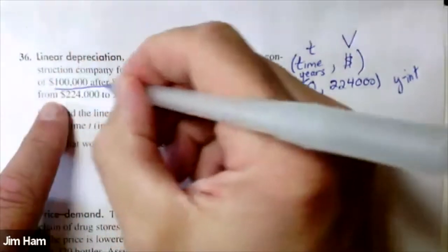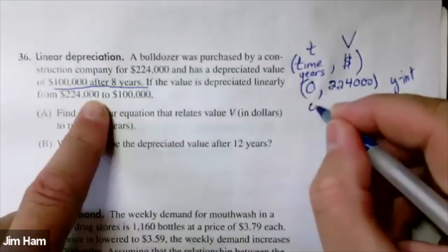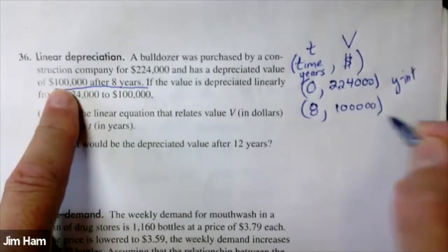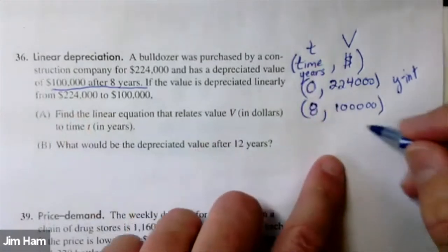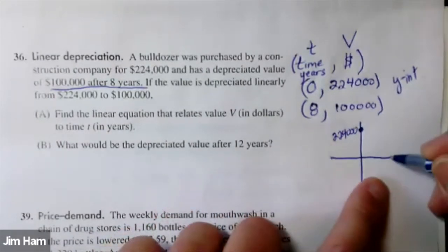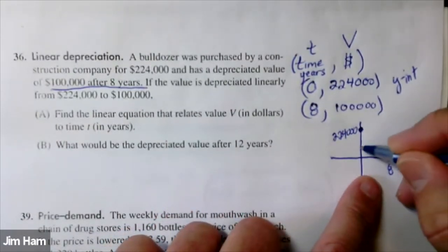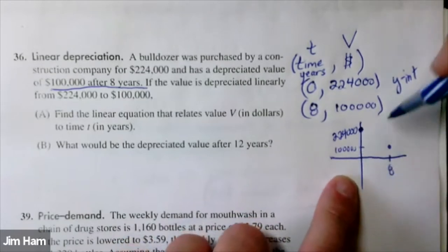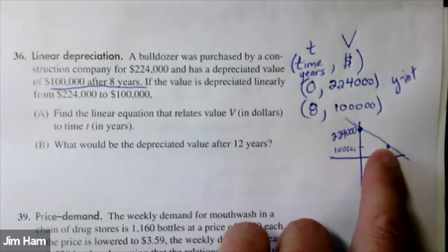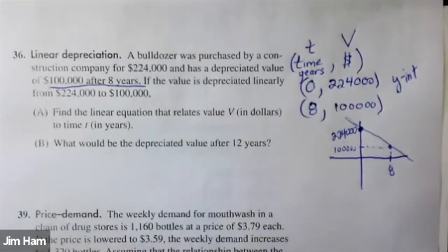The other point they give you is this one here. After eight years, the value is $100,000. So we have two points. I can quickly sketch it: zero, 224,000 — and then after eight years, it's down here at about 100,000. There's the line we're after. Our two points are plotted here and here. When you find the linear equation that relates v and t, it's like finding the equation of a line. Our steps would be to first find the slope, and there are two points.